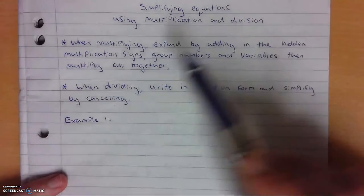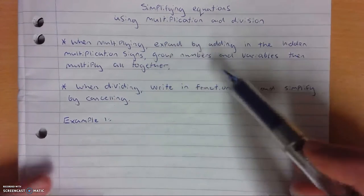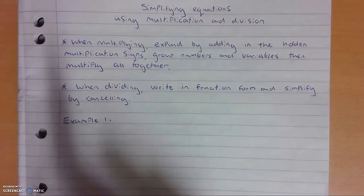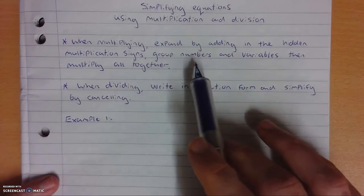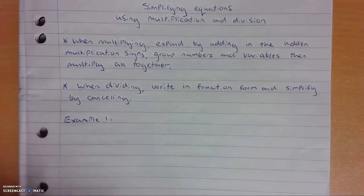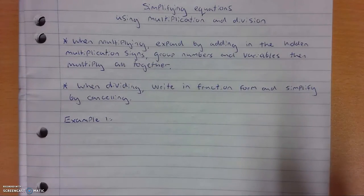So when multiplying, you want to expand by adding in the hidden multiplication signs, stuff we did in week one, and group the numbers and variables together and then you just multiply everything back together.